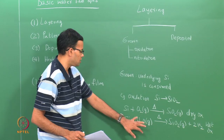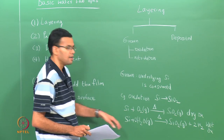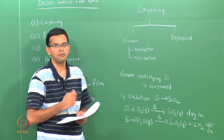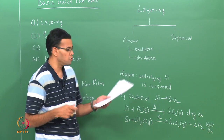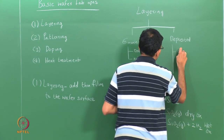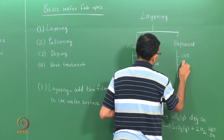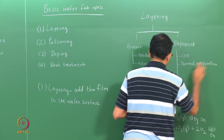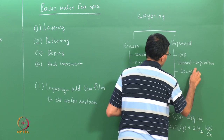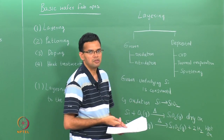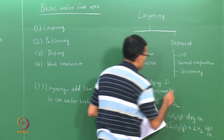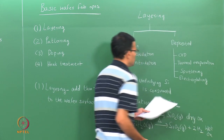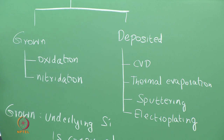In both cases, the gas you supply is oxygen or steam, and the silicon comes from the wafer. Compared to grown layers, deposited layers are those where you deposit the layer onto your wafer surface and do not consume the underlying silicon. There are a variety of deposited layers. They can be grown by chemical vapour deposition, thermal evaporation, or sputtering — both thermal evaporation and sputtering are physical vapour deposition processes. You can also have electroplating. These are some techniques for growing deposited layers onto the wafer.